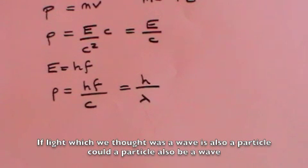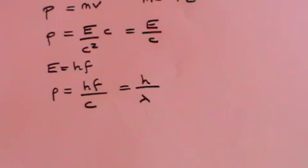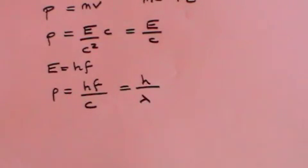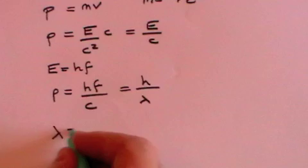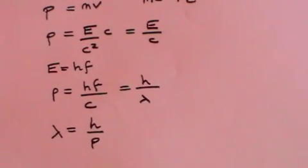could matter, which we'd always thought of as being matter, sometimes behave like a wave. And he took the formula that says that P equals H over lambda, and he simply reversed it to say that lambda equals H over P.